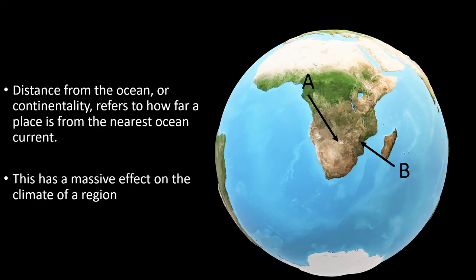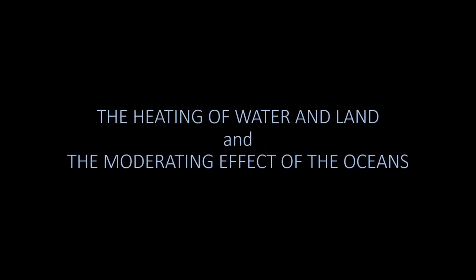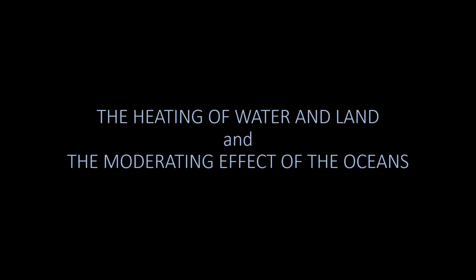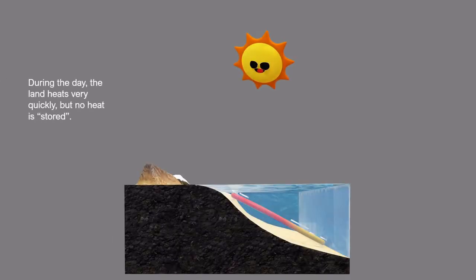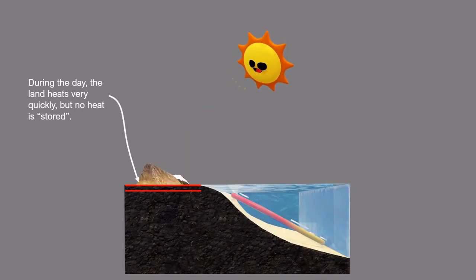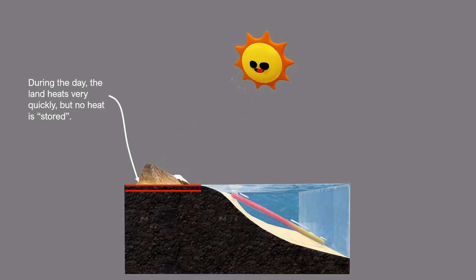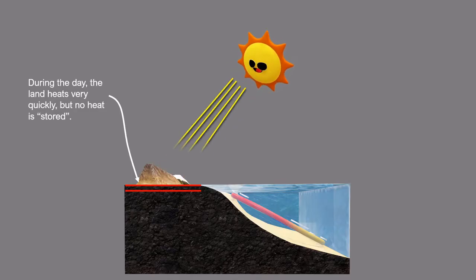To understand why this is, we need to first understand the differing ways in which water and land heat. During the day, insolation from the sun travels through the atmosphere and heats the land of the continent. This heat from the sun can only penetrate the top layer of ground, because the land is solid.